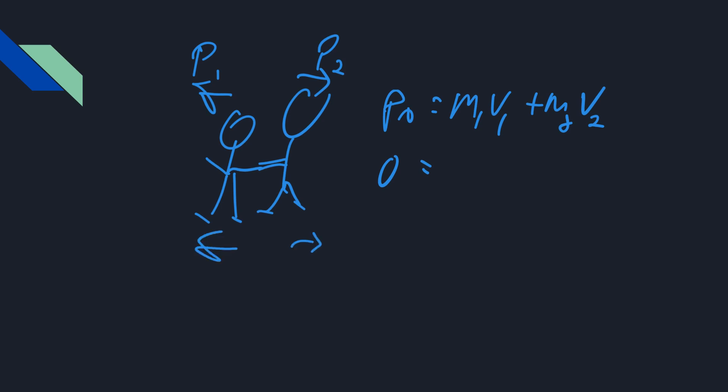The other common one you might see is what we'd call an explosion problem. So imagine you have two people, and maybe they're going to push off each other. Usually they're ice skaters. One goes one way, the other goes the other way. In this case, your initial momentum is zero, and then this person has momentum P1, and this person has momentum P2, and you would just go M1V1 plus M2V2. Notice that since one goes to the left and one goes to the right, one is ultimately going to have a positive velocity and the other one a negative velocity, and those two would cancel out. In fact, their momentums would be exactly the same in this situation.